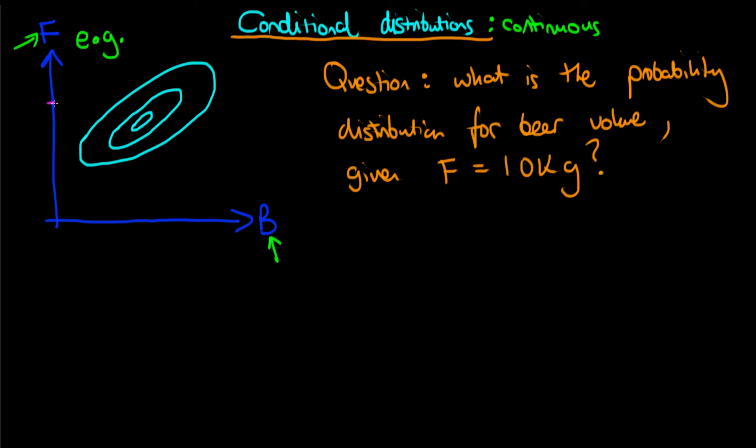So how can we actually think about working out what this probability distribution looks like? Well, intuitively, what we can do is we can imagine marking off on our body fat axis a point of 10, and we can imagine drawing a line across from 10. Then what we do is we imagine, as we kind of did before, that we are walking along this line. But now it's not quite the same as marginal distributions. It's actually simpler. All we need to do is we just keep track of how high we are as we move across this path.